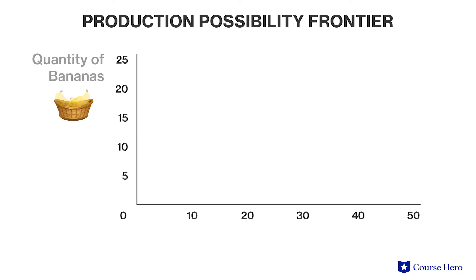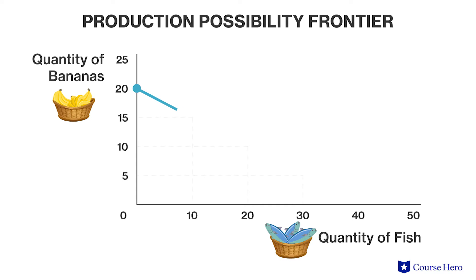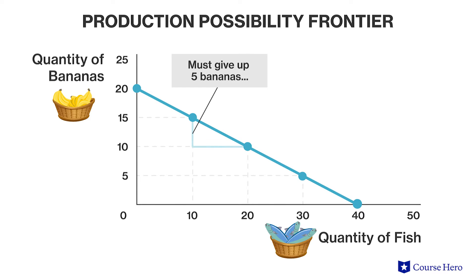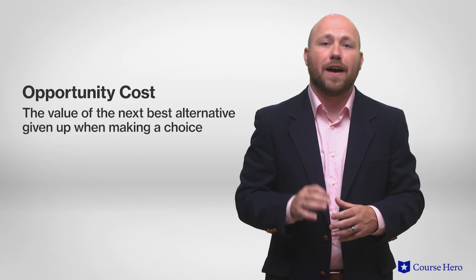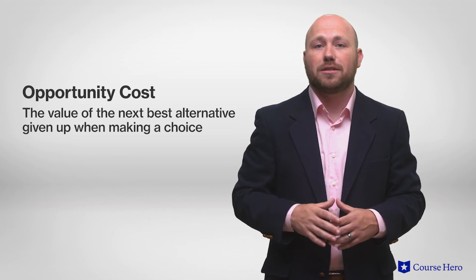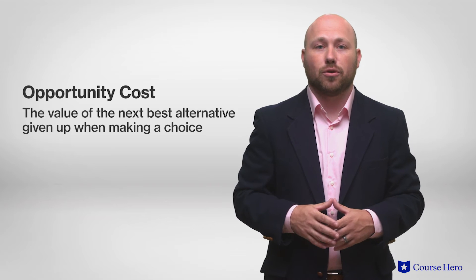The slope of his PPF shows us the trade-offs he's experiencing when making decisions. If Jerry is efficient, he is producing at a point on the frontier. If he wants to catch an additional fish, he has to give up time gathering bananas. This trade-off involves moving between points along his PPF, and it shows his opportunity cost in production, which is the value of the next best alternative given up when making a choice.